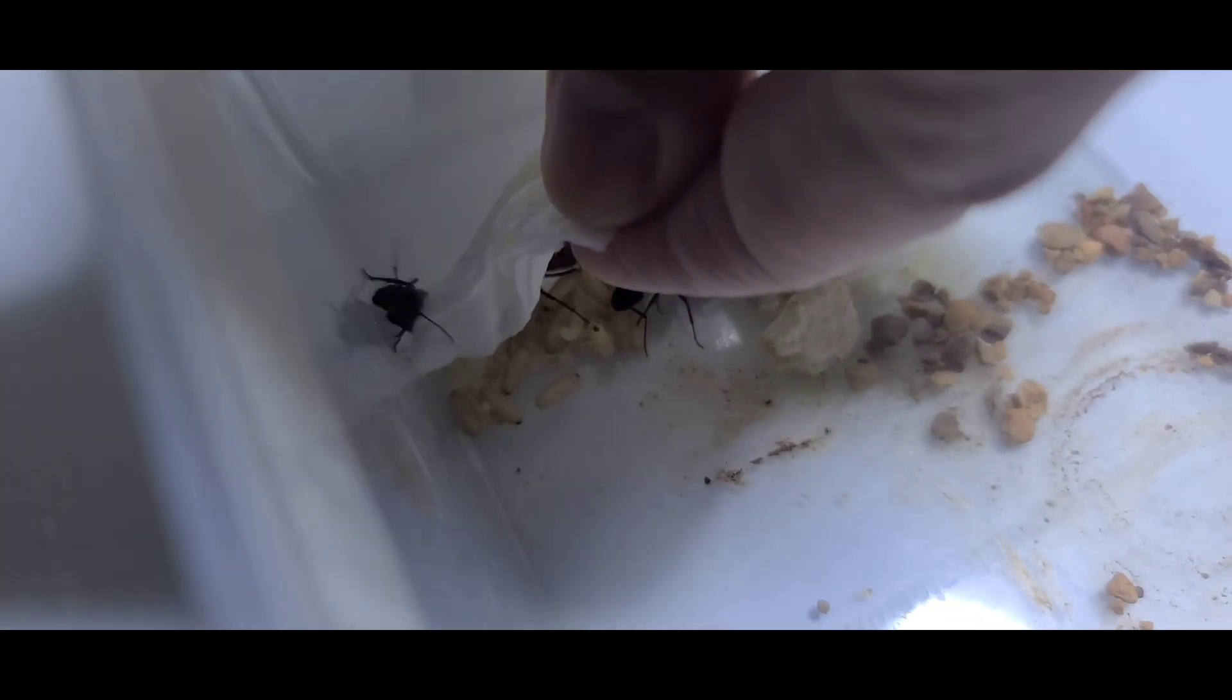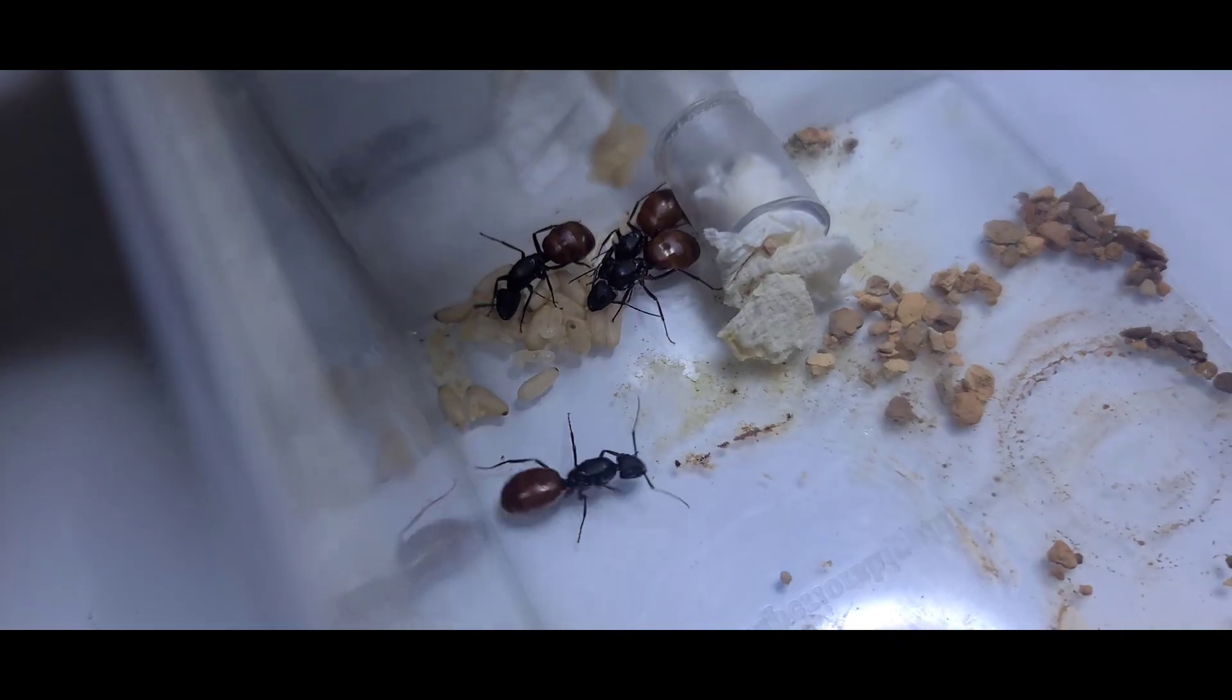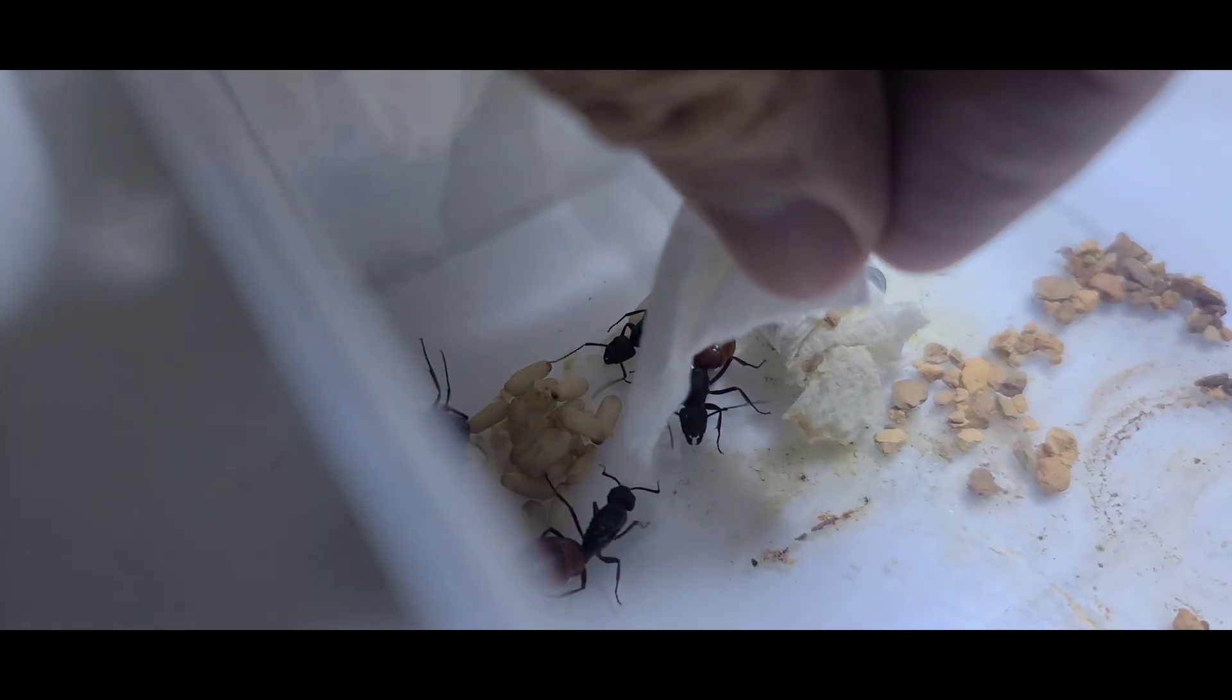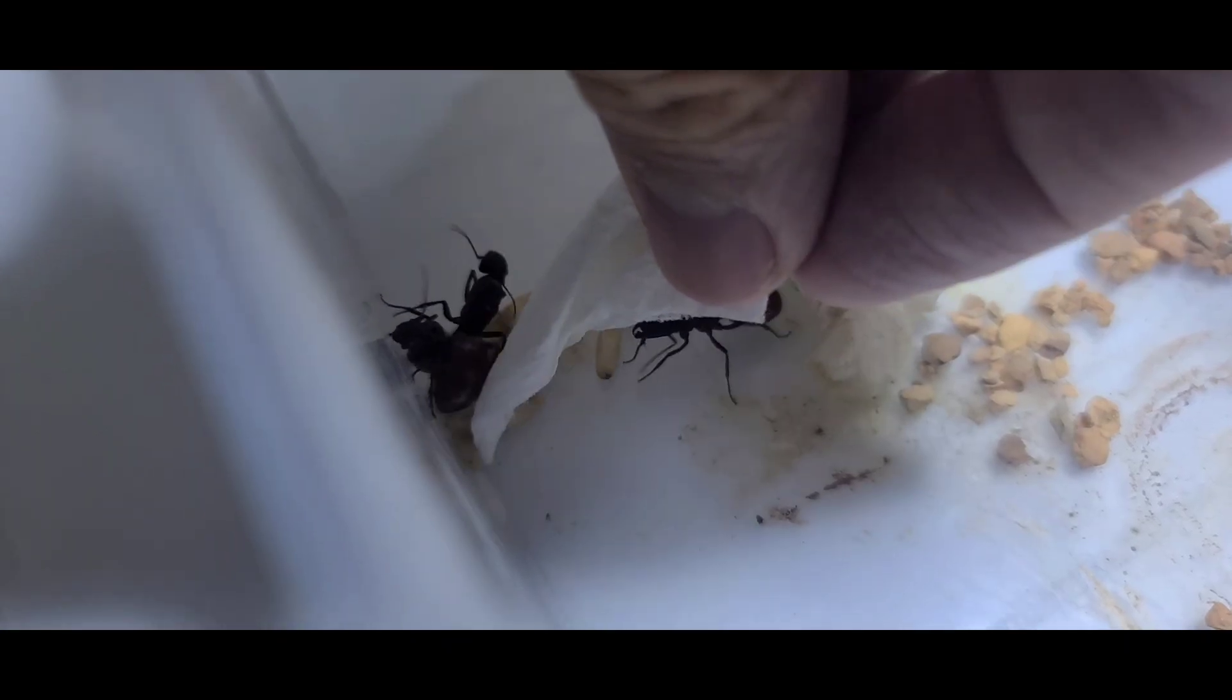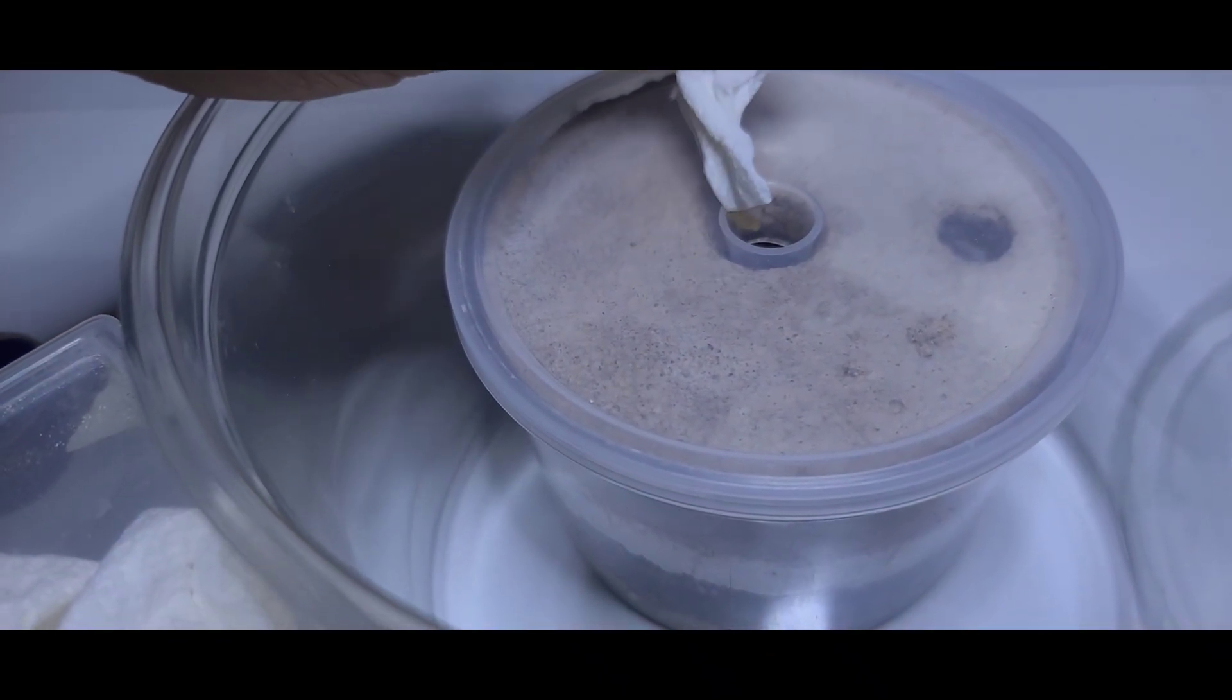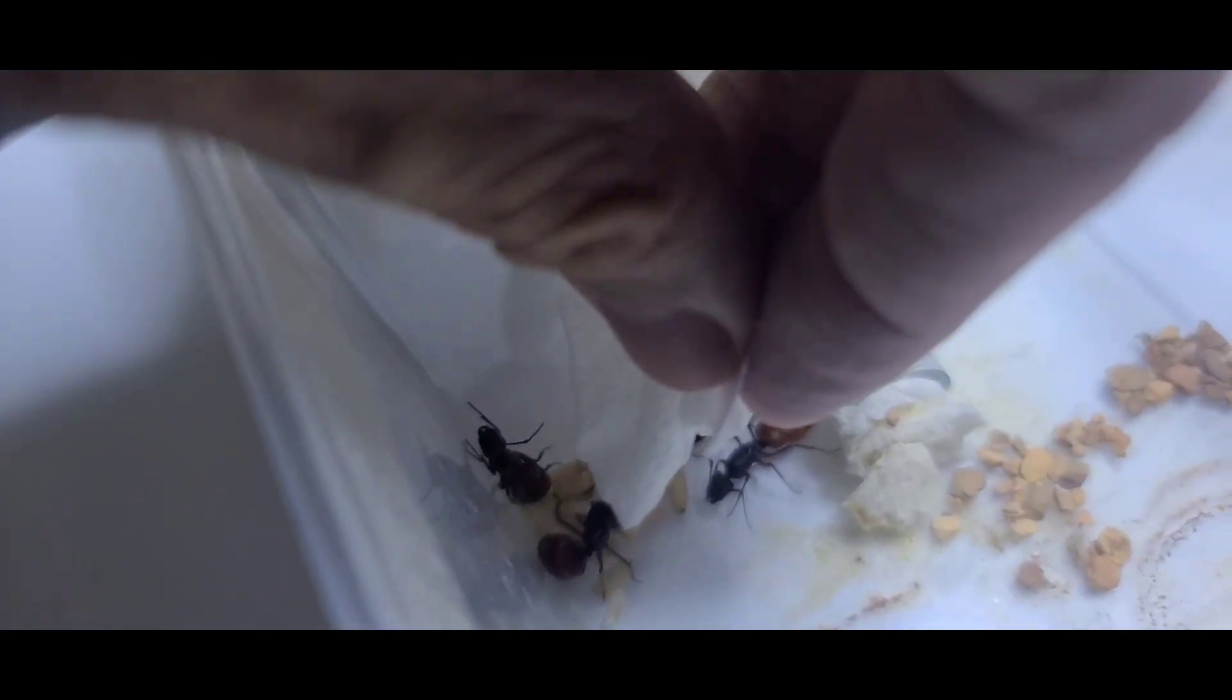The best way to transfer them is using paper towel because the paper towel method is more gentle and they won't get hurt. They just hold on to the paper towel, and the brood can stick to the paper towel. It's more gentle, and you're not going to harm your colony when you're transferring them. You can see it's working out fine.